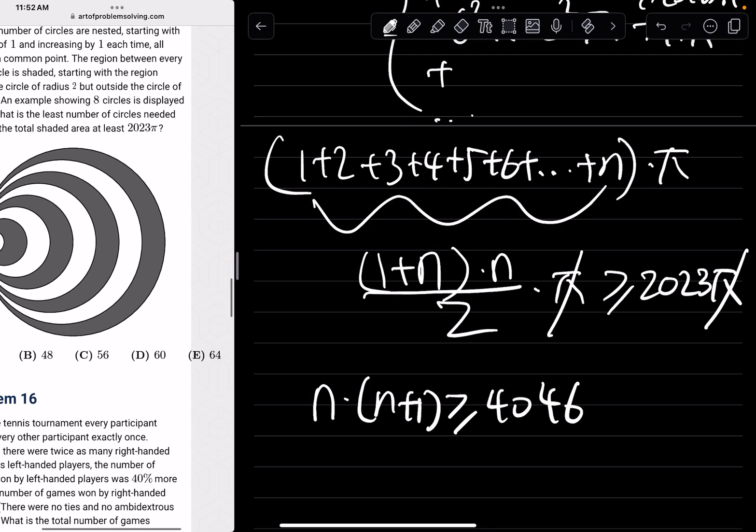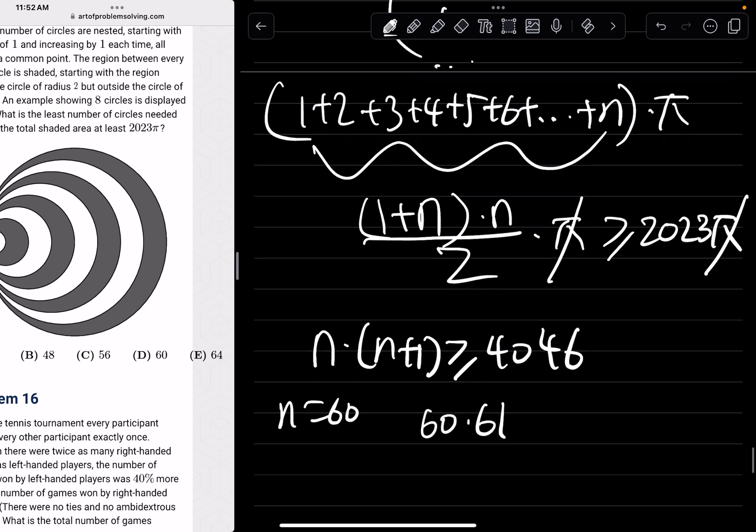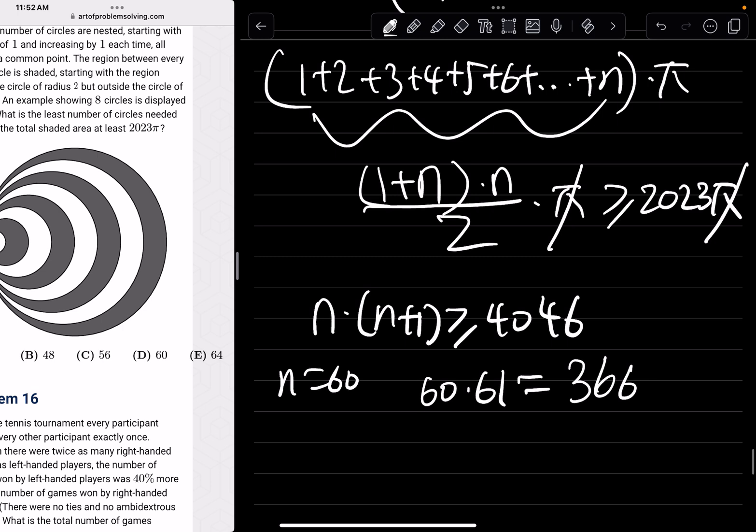So let's plug in the answers that we have here. So if we plug in answer choice D, n is 60. So 60 times 61. This is clearly not greater than 4046, right?